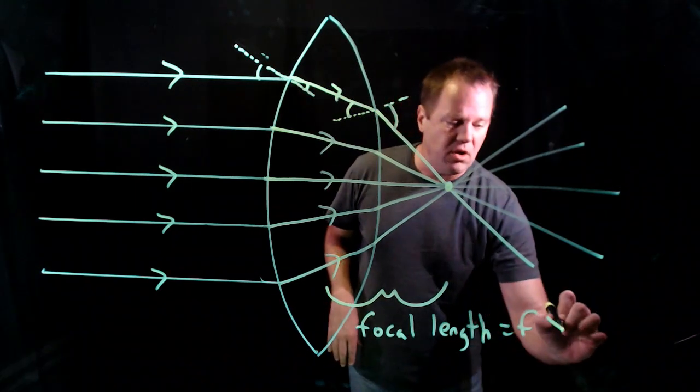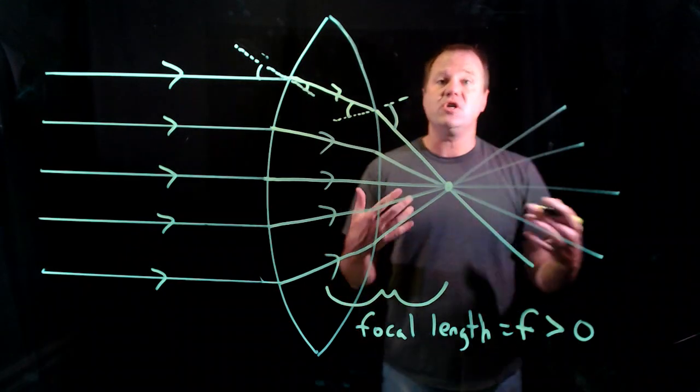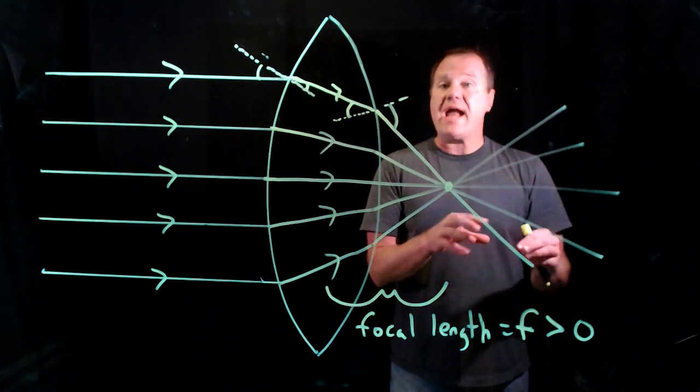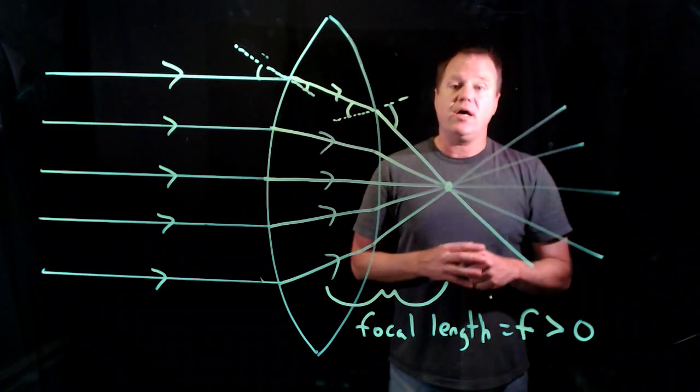And by convention, for a biconvex or converging lens, that focal length is defined to be positive. So that's what you would be using in all of your equations.